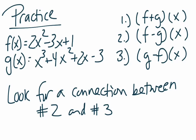Here are the practice problems. We're going to work with a quadratic and a cubic. f of x is equal to 2x squared minus 3x plus 1, and g of x is equal to x to the third plus 4x squared plus 2x minus 3. You're going to do three problems: add them — f plus g of x; subtract them — f minus g of x; and subtract them in the other direction — g minus f of x. There's a note at the bottom that says look for a connection between problems 2 and 3.